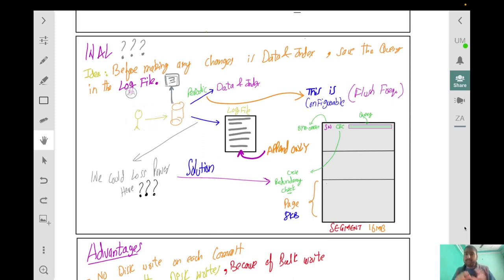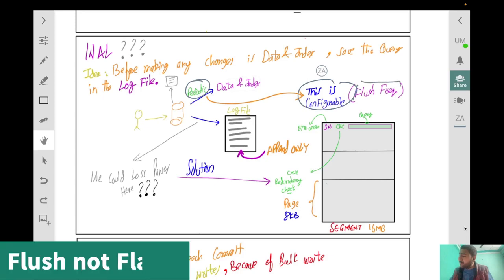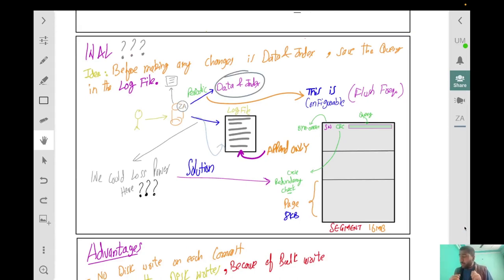We write to the log file and then we can change it into the database. This is configurable in terms of flush frequency. The point is that in this log file it is append only which is going to be very fast. In an actual update statement, updating a million rows versus simply adding one line, you can understand that difference. That is why this write-ahead log is very fast.